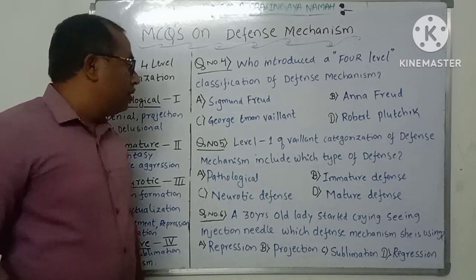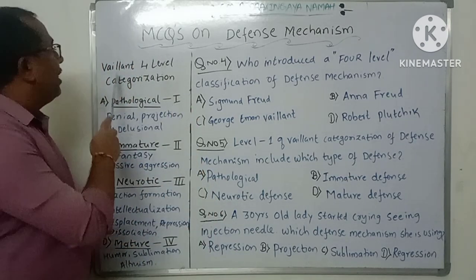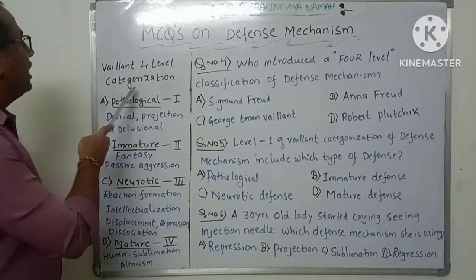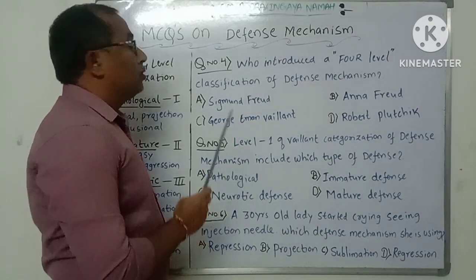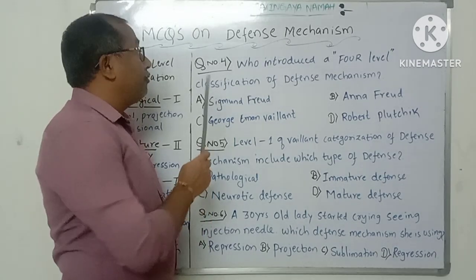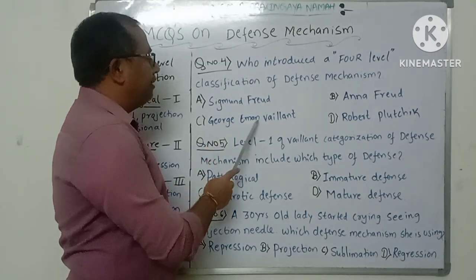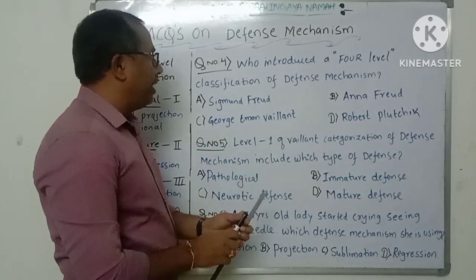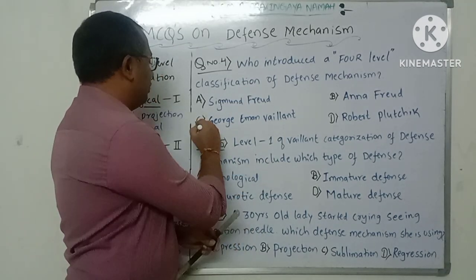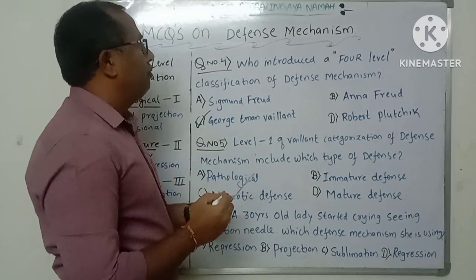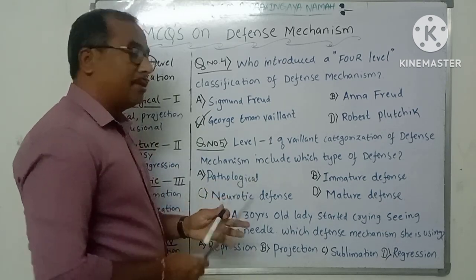Once a person is involved in service which gives satisfaction to him, that is known as altruism. So this is all about Vaillant's four-level classification of defense mechanisms. The correct answer for question four is George Vaillant, who classified the four-level classification of defense mechanisms.